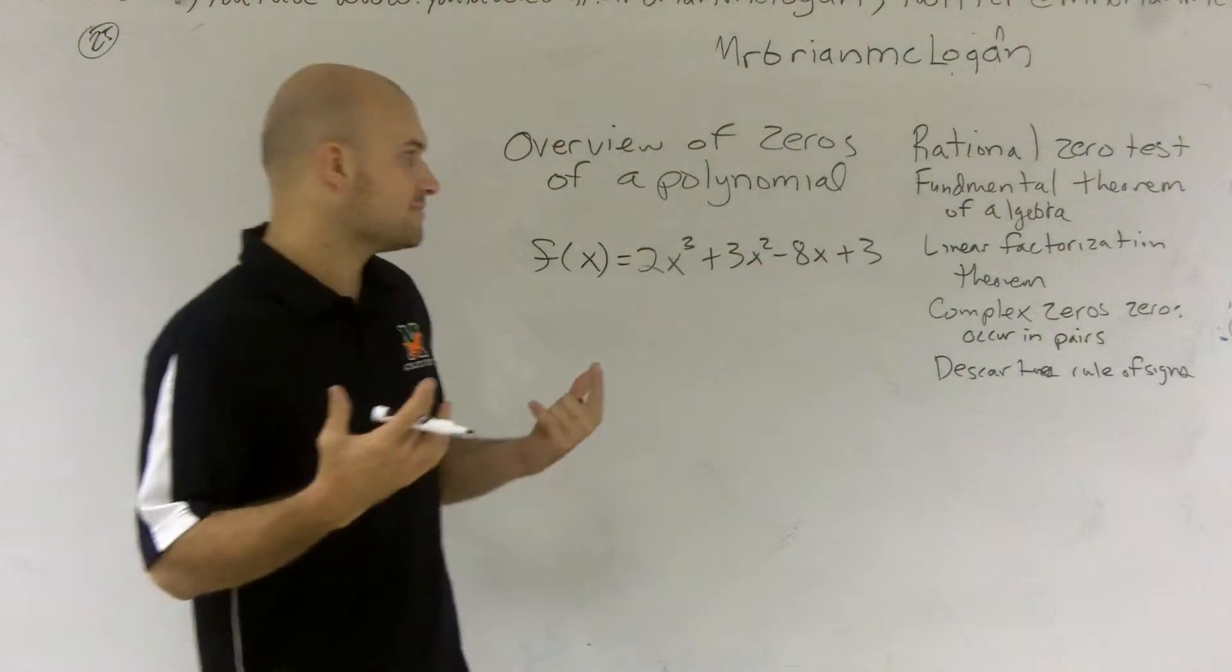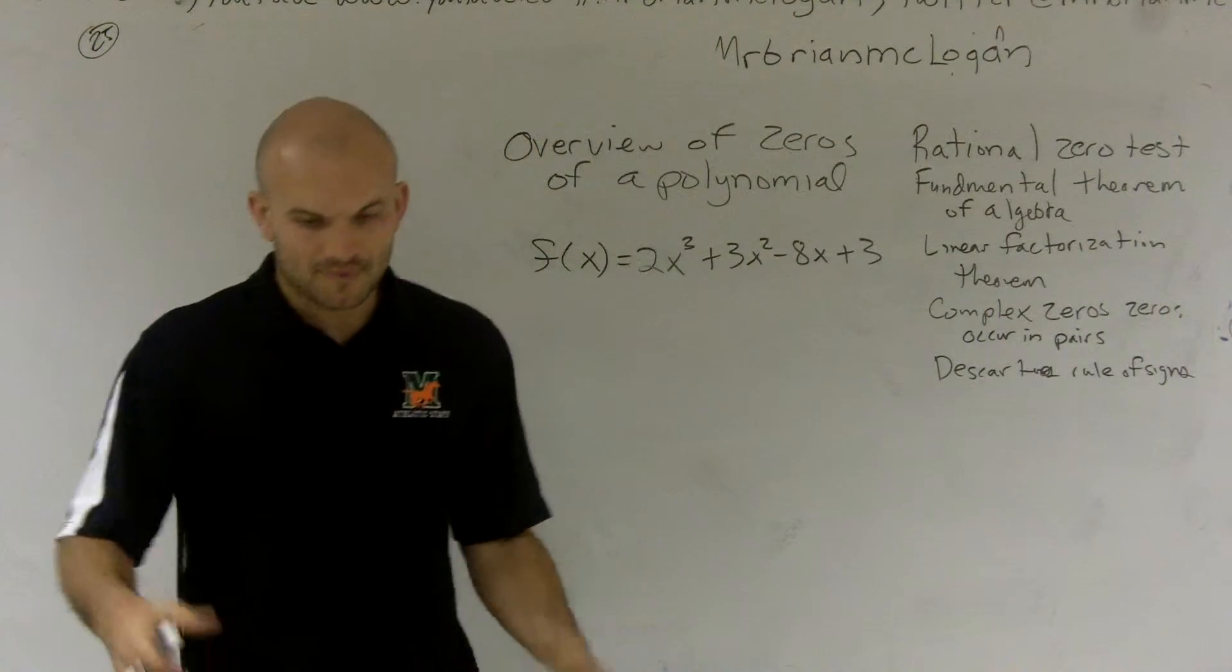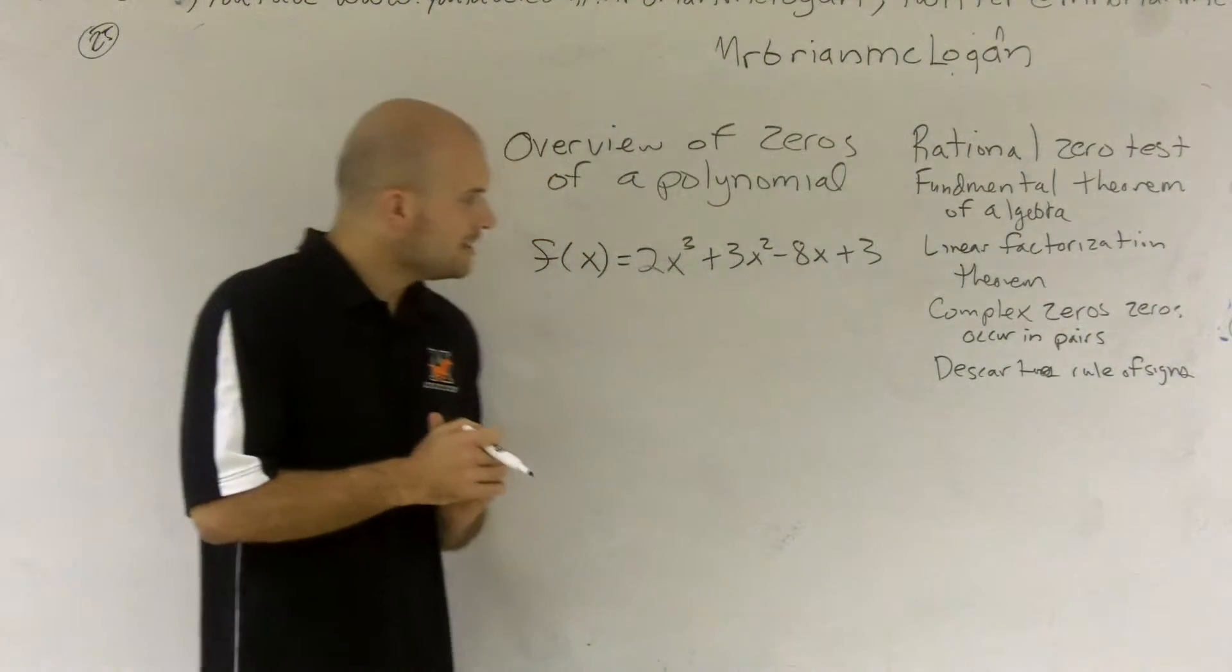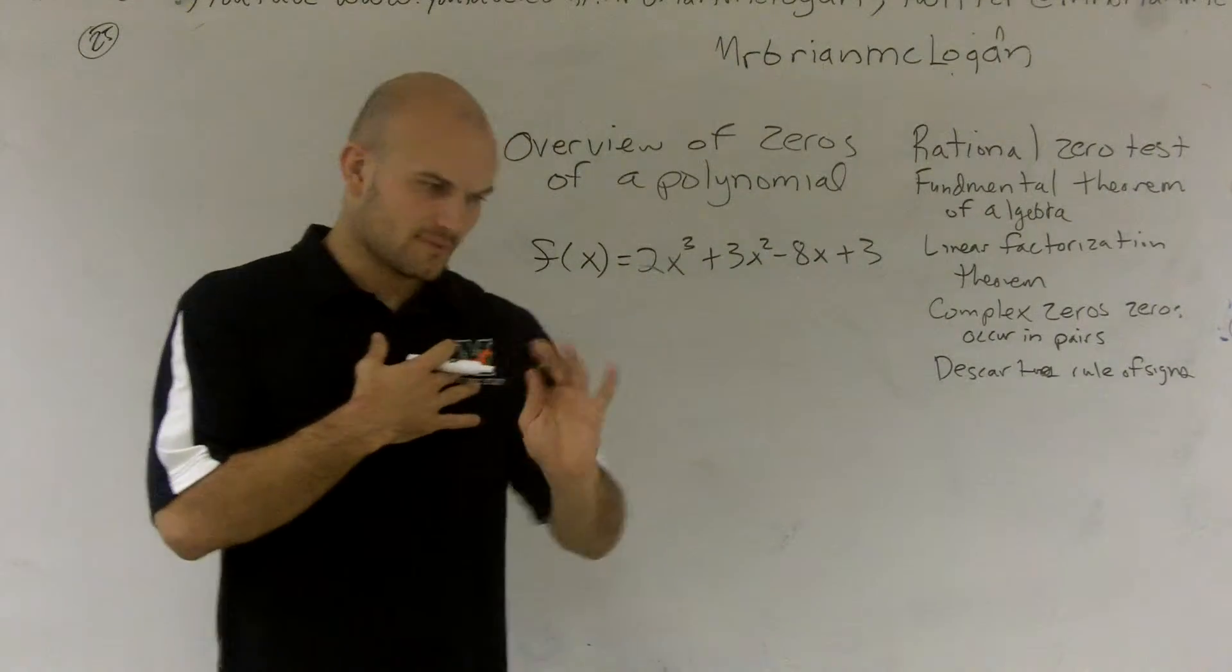There could be more, but there's at least one factor for all polynomials. When you have a degree of 1, obviously - because if it was 0, it would just always equal 1. So whenever you have a polynomial, there's going to be at least one factor.